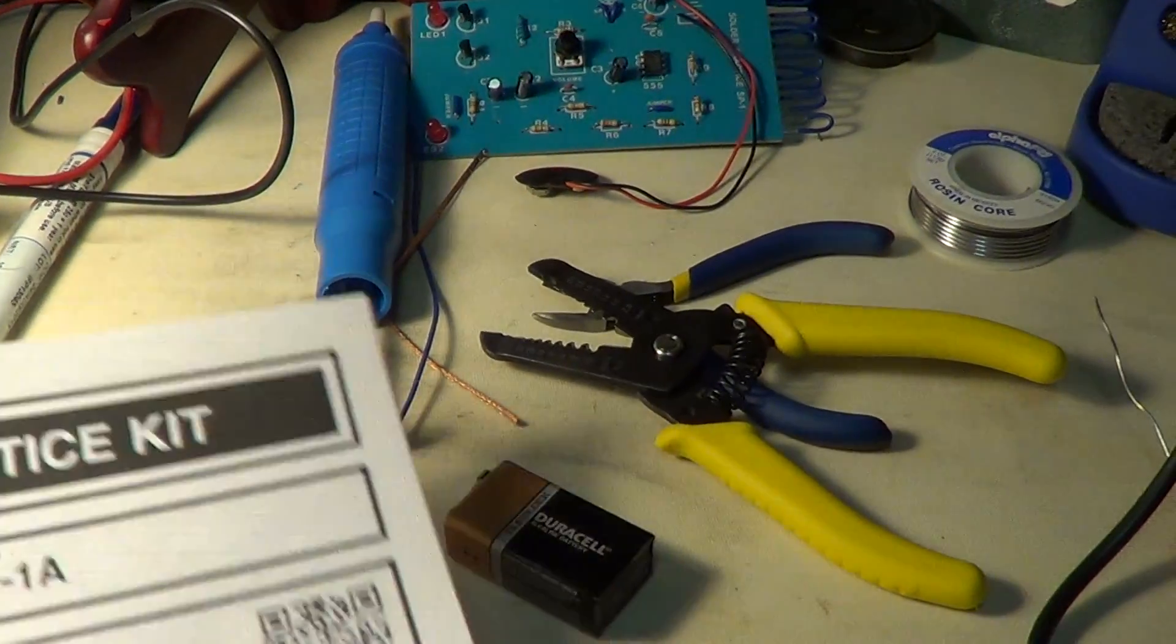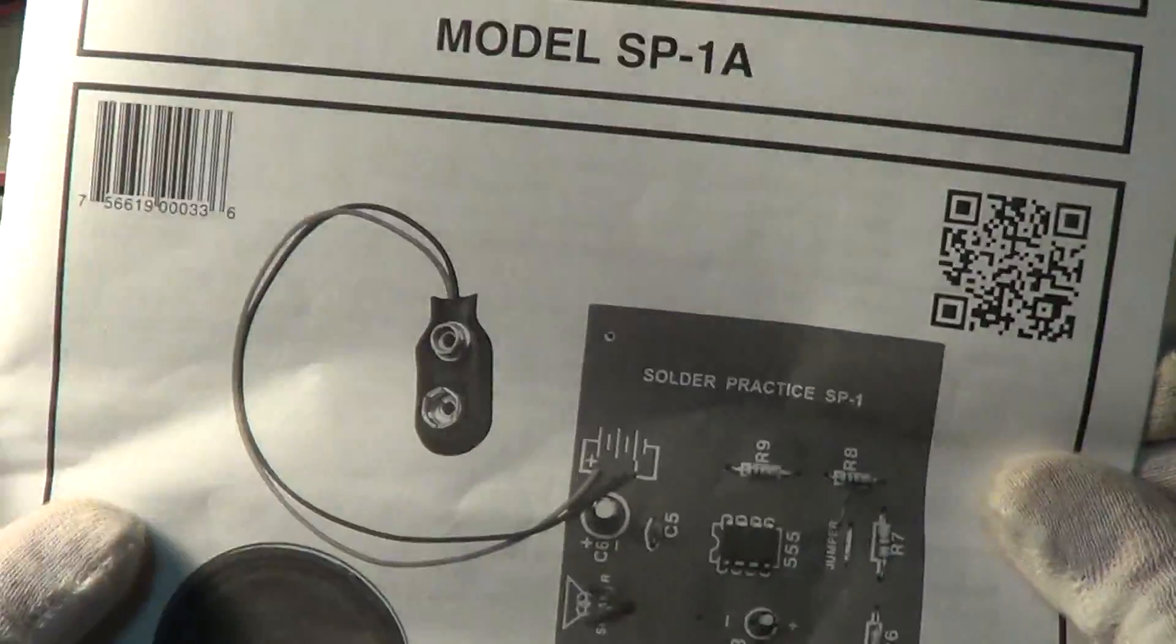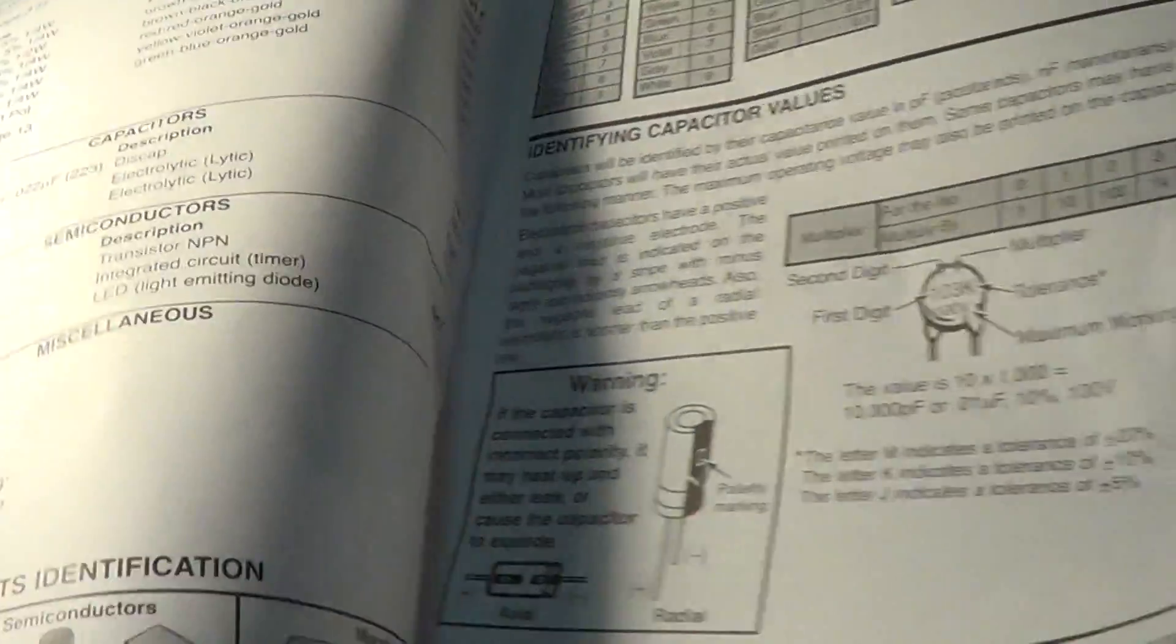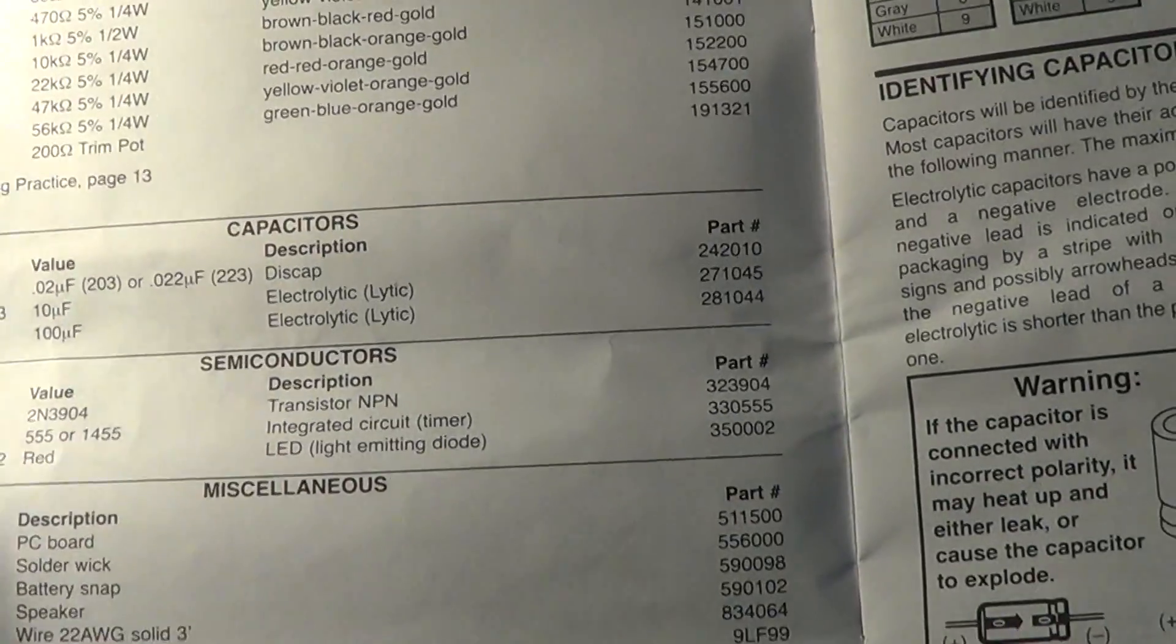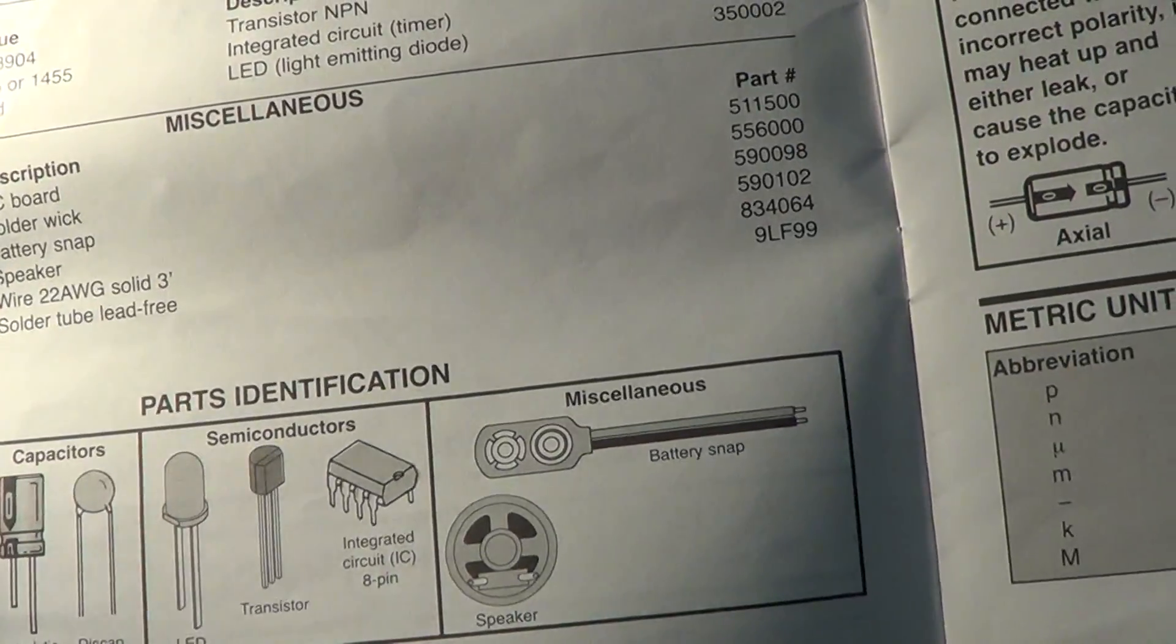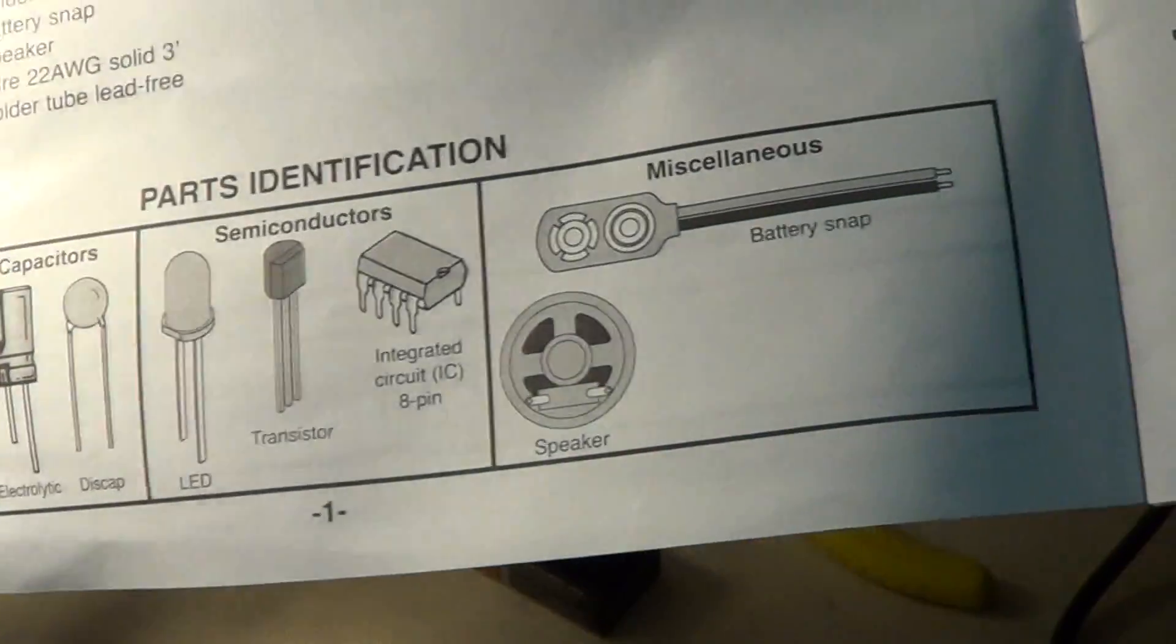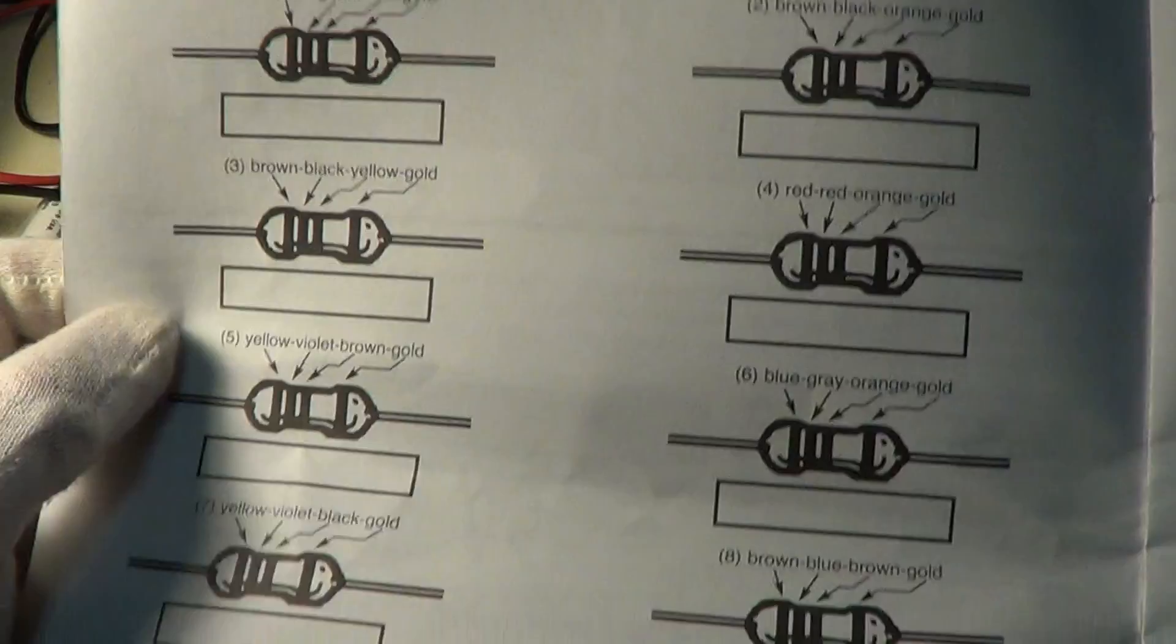Let's take a look at the manual. It's a solder practice kit model SP-1A and I must say it has a really good manual. Everything is explained, all the parts are listed—it's got resistors, capacitors, semiconductors, and the miscellaneous—the PC board, speaker, wires—and it shows a parts identification right down here, excellent.